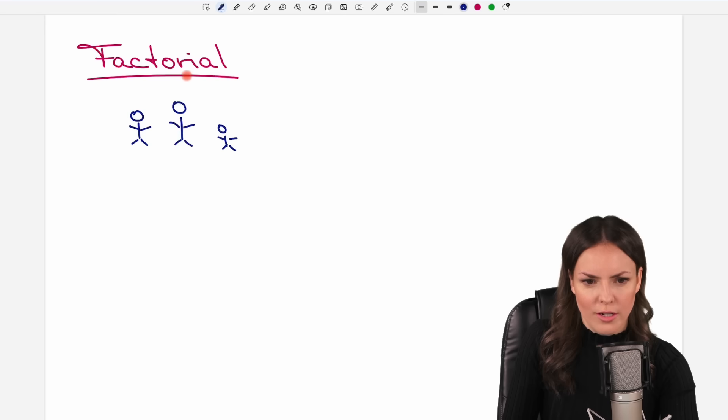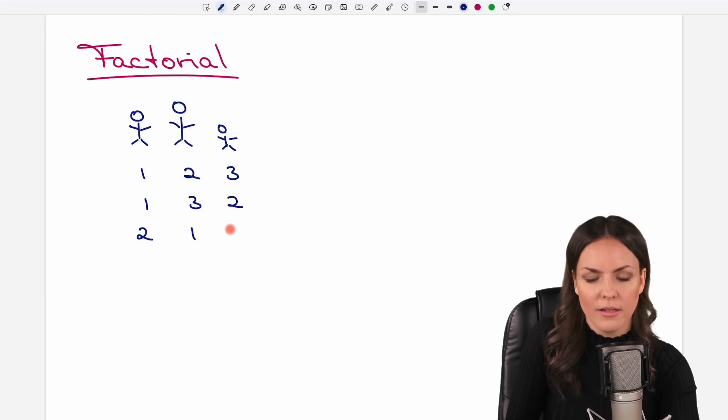So before using the factorial, let's just see how many ways we have. So we have one, two, three people like this. Or we leave the first here and we switch these two. Or we take the second guy first and have the other two here. Or we leave this guy here and switch these two. And the same with the third person. We have a one and two here. Or we switch these two. These are all our possibilities. We have six ways to do this.